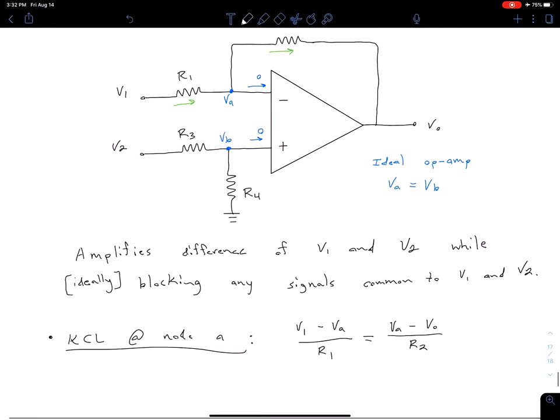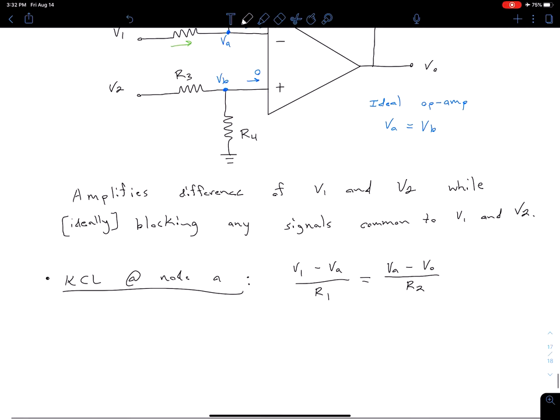With some algebra, we can rearrange this to solve for V0. We do that by multiplying both sides by R2, and then subtracting VA, and then multiplying by negative 1. So we do all of that, and we get V0 equals the quantity 1 plus R2 over R1 times VA minus R2 divided by R1 times V1. Let's label this as equation 1.